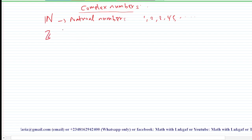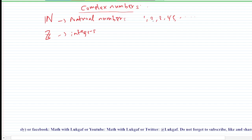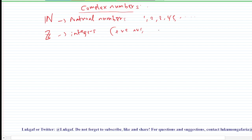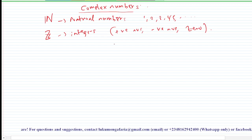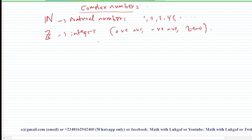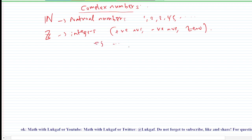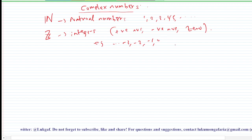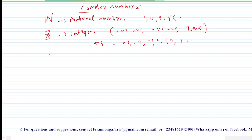Integers are the set of positive numbers, negative numbers, and zero. So when you have a set of numbers that comprises all the positive numbers, negatives, and zero, we say such a number is an integer. For example: minus three, minus two, minus one, zero, one, two, three. That's integers. Likewise, we have rational numbers.